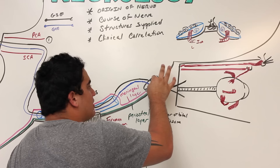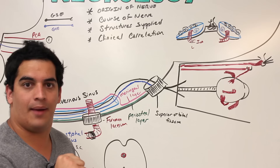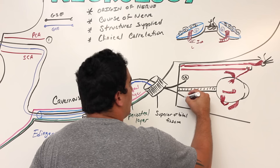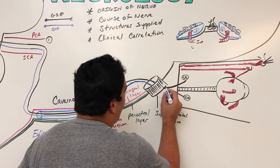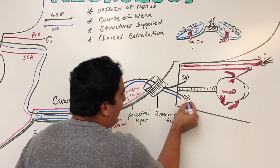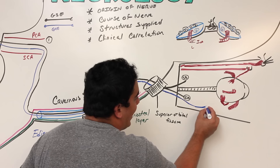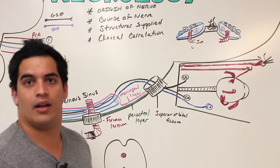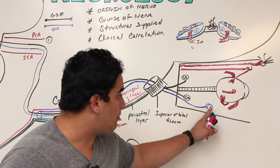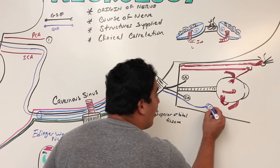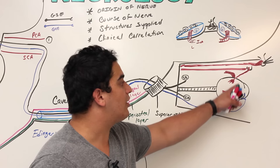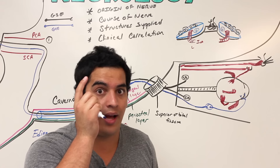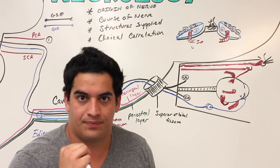Once the oculomotor nerve passes through the superior orbital fissure, it gives off two branches: a superior branch and an inferior branch. The parasympathetic fibers travel with the inferior branch, then leave it to synapse at a ganglion. A ganglion is a group of cell bodies in the peripheral nervous system — these are postganglionic parasympathetic motor neurons. They go on to supply the iris (specifically the sphincter pupillae) and the ciliaris muscle, causing the lens to become globular for near vision.